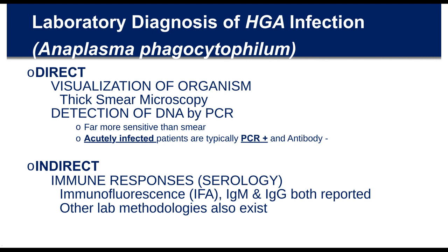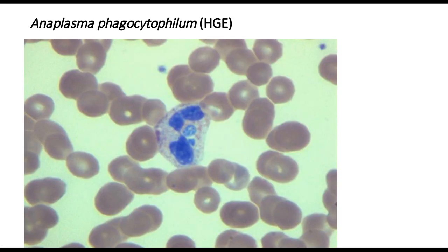How do you diagnose anaplasma? Same as all these infections: acutely infected patients are PCR positive and antibody negative. I have seen many cases where a doctor asks for an anaplasma blood test, a serology gets ordered by mistake, comes back negative, and the patient remains acutely sick until another doctor orders the PCR and makes the diagnosis. Anaplasma intragranulocytic inclusions visible on smear are diagnostic when you can find them, but it's not easy — though when you see it, it's diagnostic.